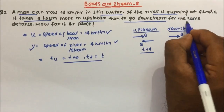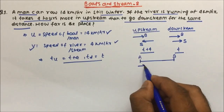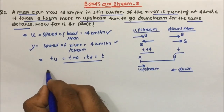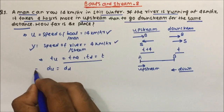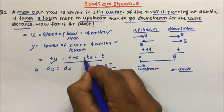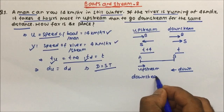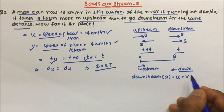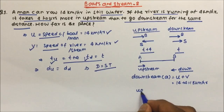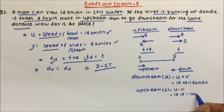The distance is the same in both directions — suppose this is point A and point B. So upstream distance equals downstream distance. Distance equals speed into time. Downstream speed is speed of boat plus speed of stream: U plus V = 14 plus 4 = 18 km per hour. Upstream speed is U minus V = 14 minus 4 = 10 km per hour. So speed is also determined.